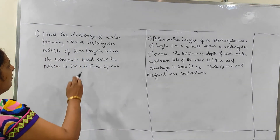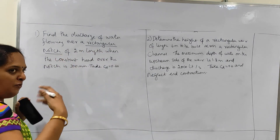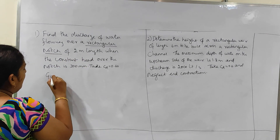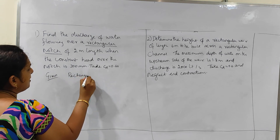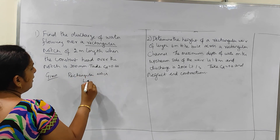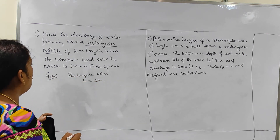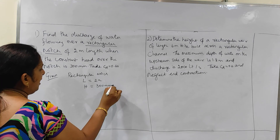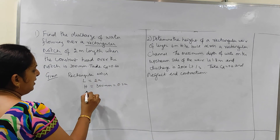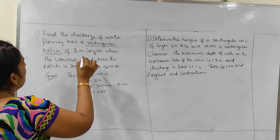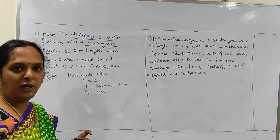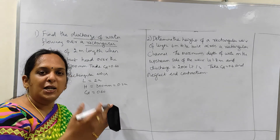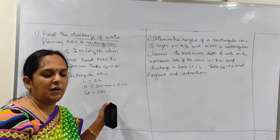Problem 1: Find the discharge of water flowing over a rectangular notch of 2 meter length when the head held over the notch is 300 mm. Take CD = 0.60. What is given: type is rectangular notch, length L = 2 meters, head H = 300 mm = 0.3 meters, and CD = 0.6. We need to find the discharge of water flowing over the rectangular notch.